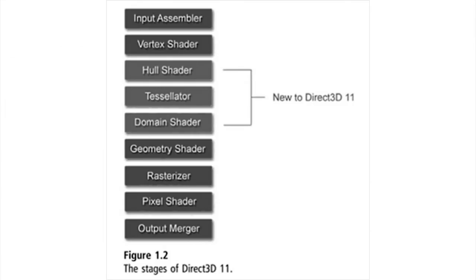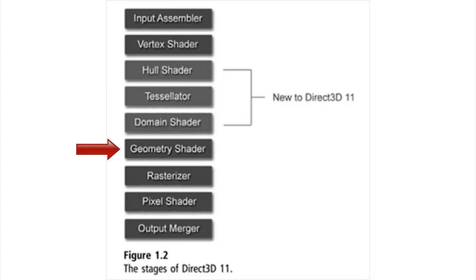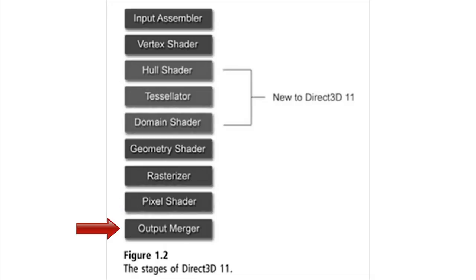Here's a simplified flowchart of the stages of the pipeline. The different stages are: input assembler, vertex shader, hull shader, tessellator, domain shader, geometry shader, rasterizer, pixel shader, and output merger.